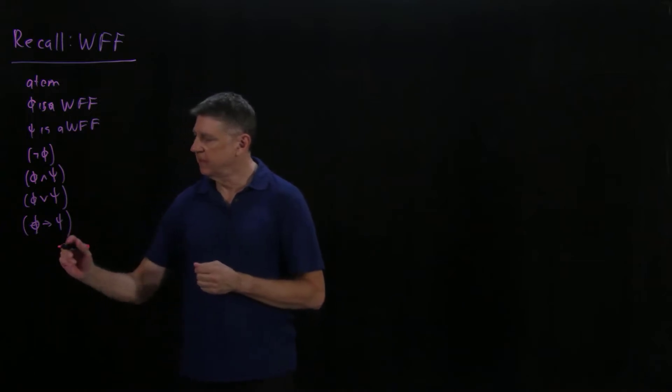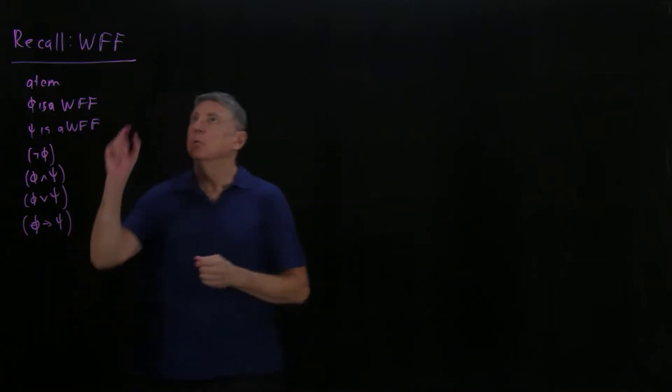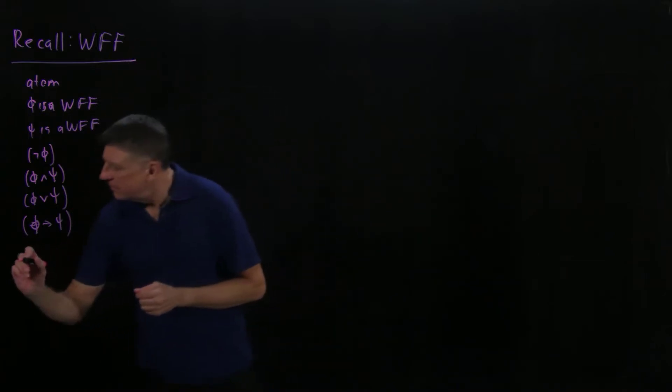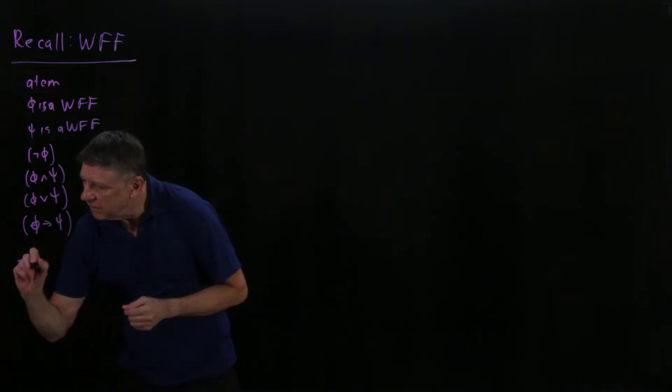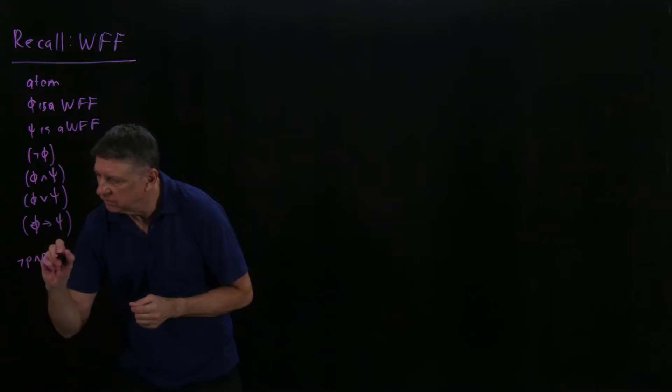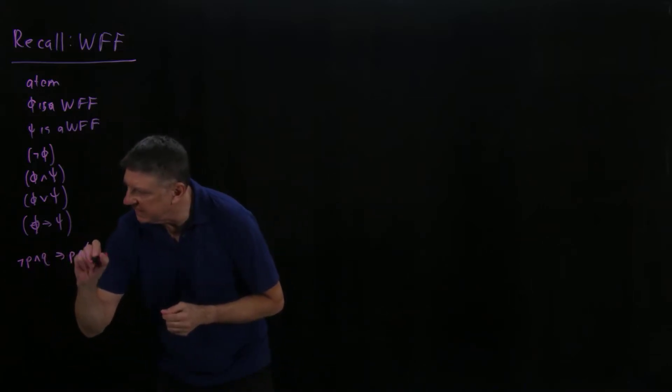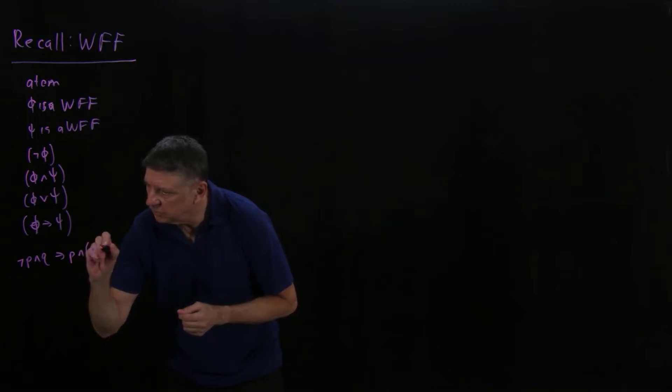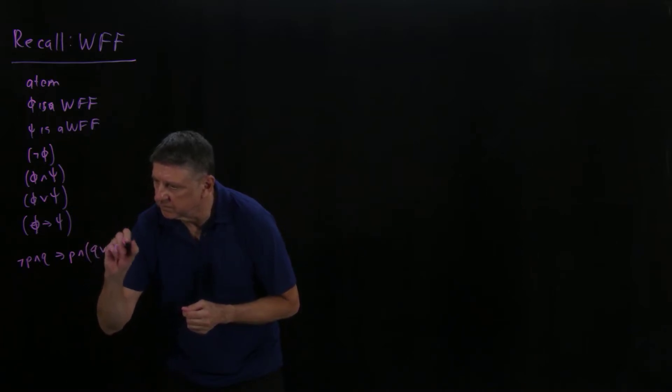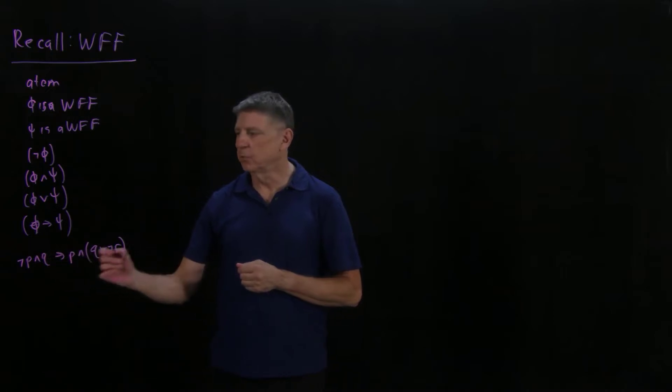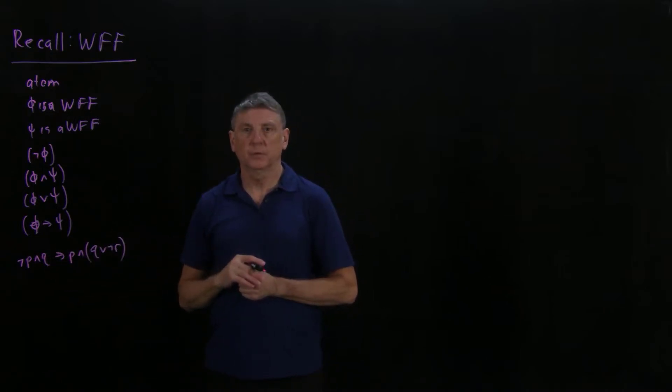Suppose that we have a formula which is not p and q implies p and q or not r. This is a formula, but it's not a well-formed formula.